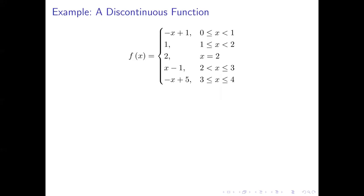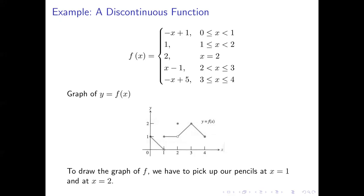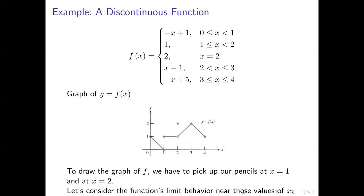Here's another example of a discontinuous function. This is a piecewise analytical definition of a function — a fairly complicated looking one because it's got five pieces, although all the parts are relatively simple. Here's a graph of the function, and you can see how each piece of the definition corresponds to one part of the graph. Notice in the graph that if we want to draw it, we need to pick our pencils up — at the very least when we get to where x equals one and where x equals two. What we're going to look at here is what's happening to the limits of the function near those values of x.